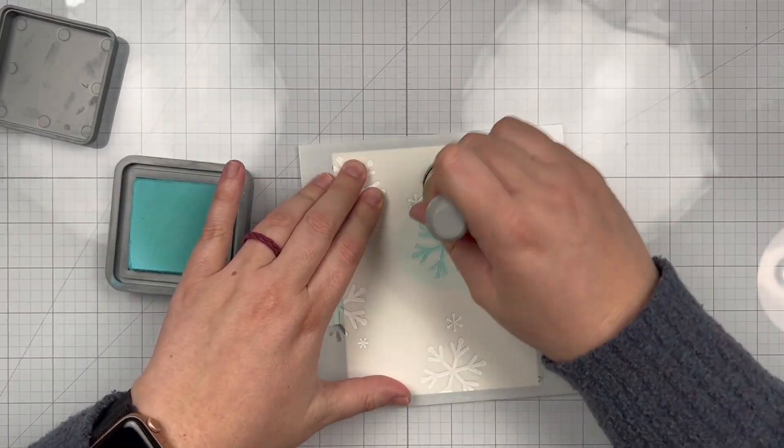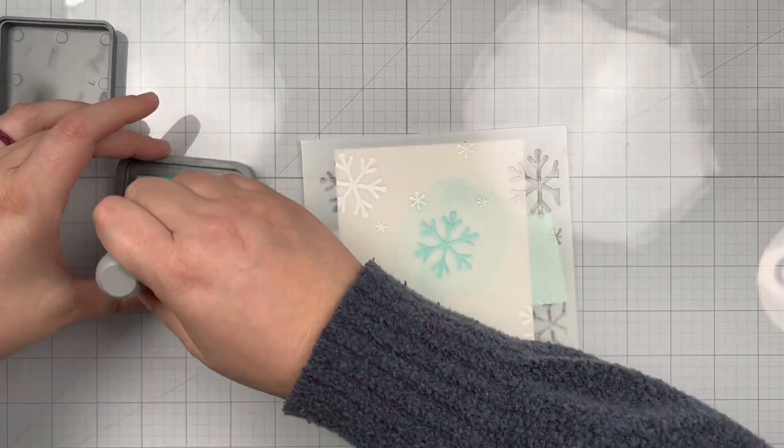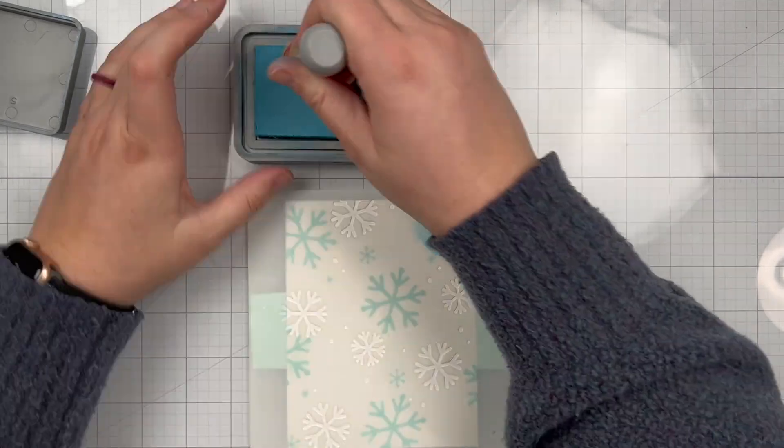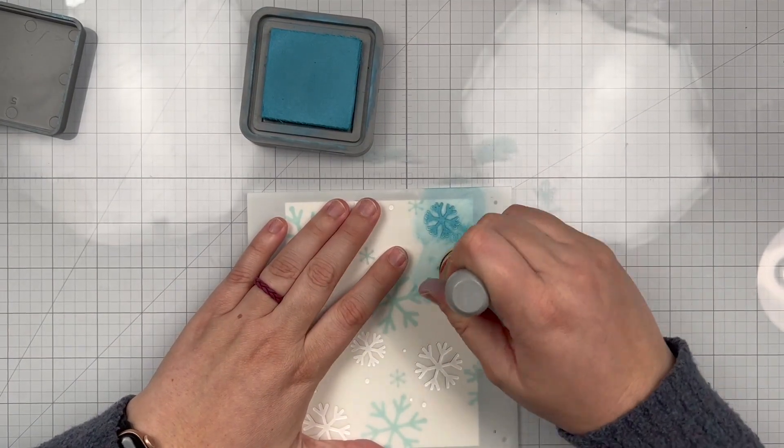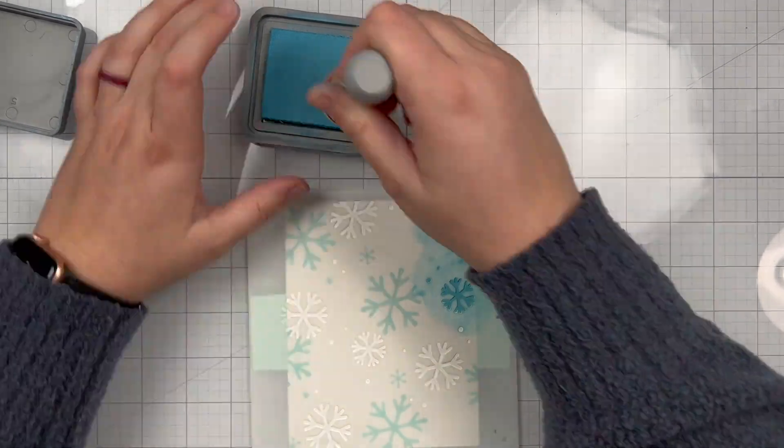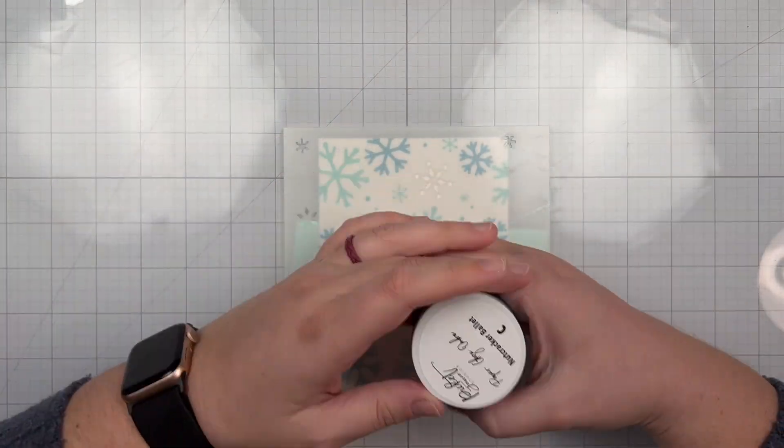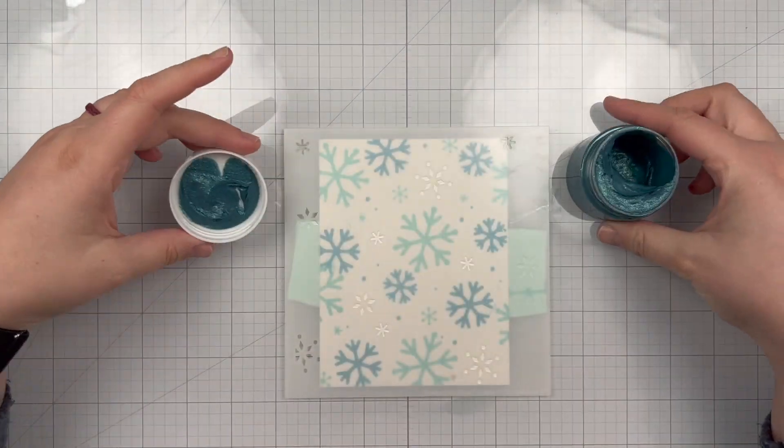And then when I layer on the B Stencil, which is slightly smaller snowflakes, I'm going to use Broken China, and I'm picking colors that, to me, look like they match really well with the Winter Snowflakes Clay Confetti.